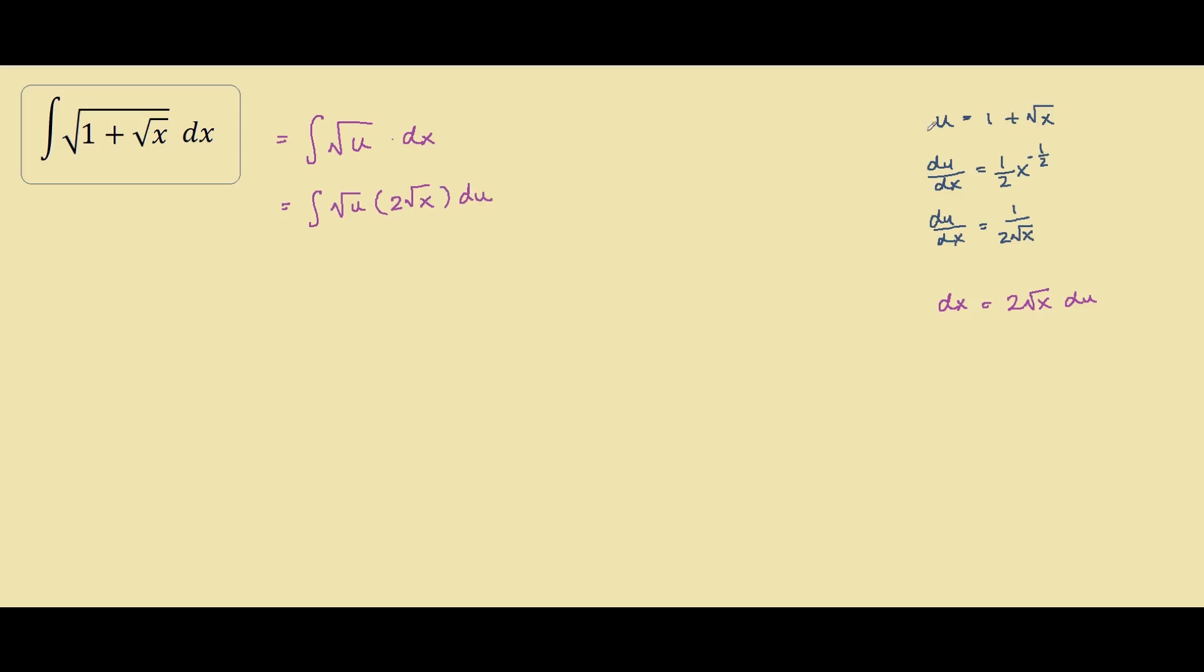So by rearranging this equation up here, all we do is subtract 1 from both sides, so we isolate the square root of x to u minus 1. So we have the square root of x equals to u minus 1.